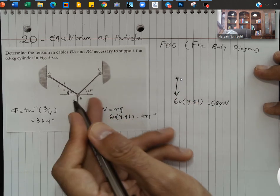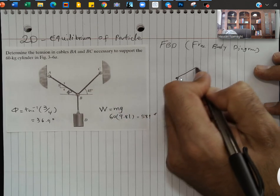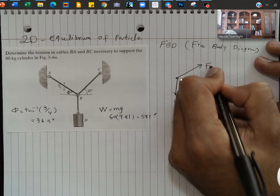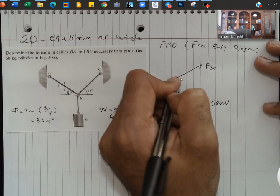So there are two forces pulling up. One force is FBC. The other force is FBA.